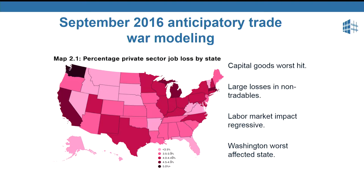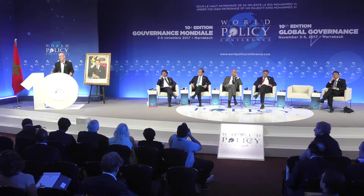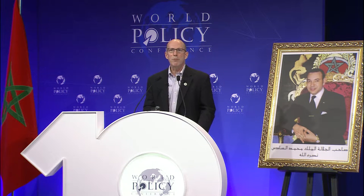In anticipation of the election last year, I did some modeling along with some colleagues at the Peterson Institute to look at what the impact would be on the United States, modeling trade wars with China and Mexico. What you can see from that map is that the effects are significant and they are not uniform across the states. Capital goods industries would be the worst hit, both because of the decline in domestic investment associated with the trade war as well as a reduction of exports of those goods. What's really interesting is there are large employment losses in non-tradables, and because of the pattern of hiring in those sectors, most of the U.S. casualties in a trade war would be among the most vulnerable people in society.